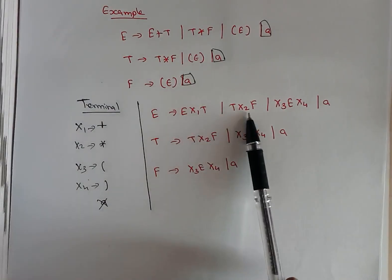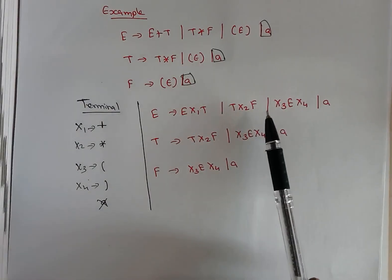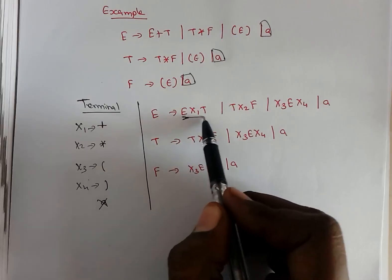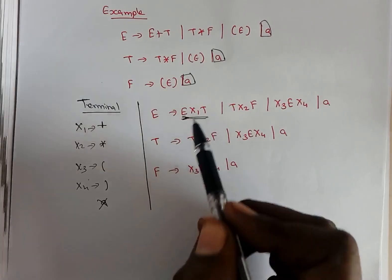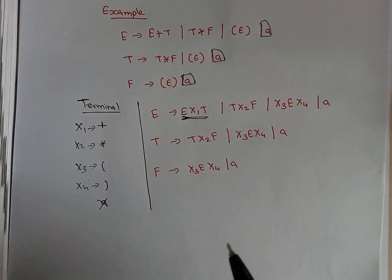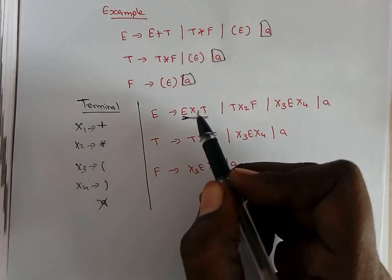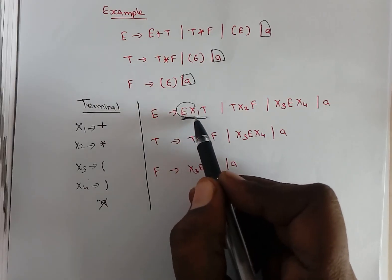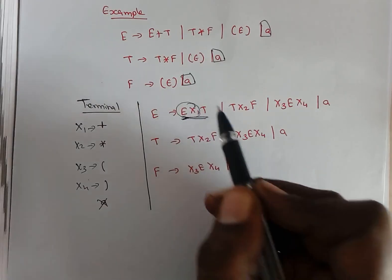Now we don't have a combination of variable and terminal symbols. But the problem is we still have three variables coming together. As per our general structure, we should have only two variables combined together. Whenever you have that structure, we can consider any two variables and assign a new variable for them.